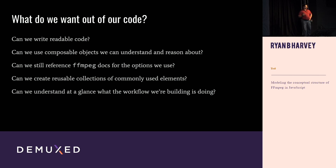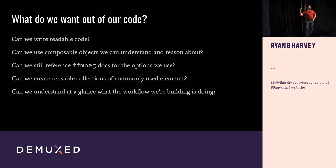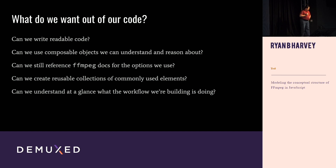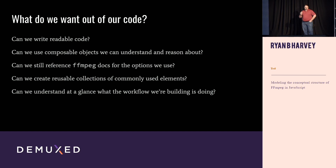So what do we really want out of the code? We were looking for code that's readable. Can we use composable objects that we can understand and reason about? For example, if you have to extract planes, run super resolution, and then merge the planes back — it'd be nice to have that in a library of objects we can just import and use without rewriting it every time. Can we still reference the FFmpeg documentation directly? Can we create reasonable collections? And can we understand at a glance, just by looking at the code, what the workflow is actually doing?